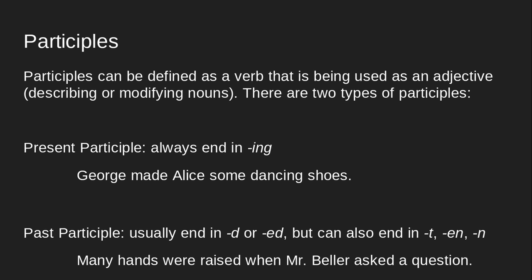In our example, we have 'George made Alice some dancing shoes.' We know our subject is George, and what is he doing? He's making something for Alice — that happens to be dancing shoes. The -ing word we have is 'dancing.' If we take that off, 'dance' is a verb we can do — we can get up and dance. But in this sentence, it's helping us identify what type of shoes George made for Alice. That is your present participle in that example.